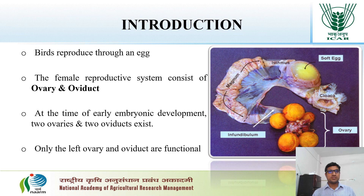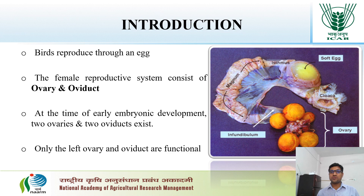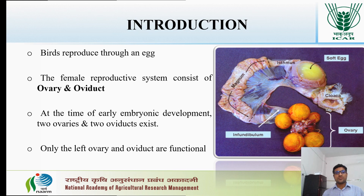At the time of early embryonic development, you will find two ovaries and oviducts. But the right set of the ovary and oviduct get atrophied under the influence of Müllerian inhibiting substance, or the Müllerian inhibiting hormone. And at the time of hatching, only the left ovary and oviduct remain functional.